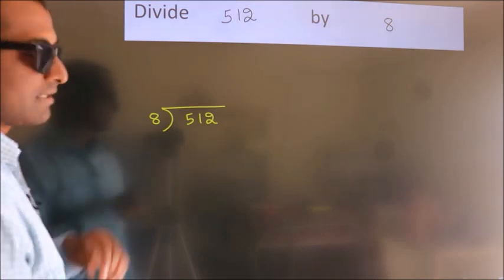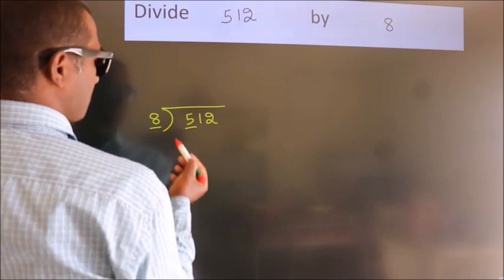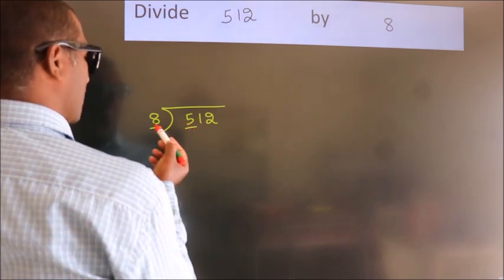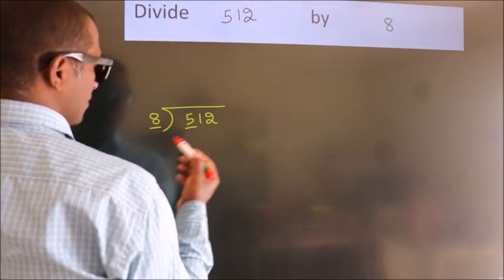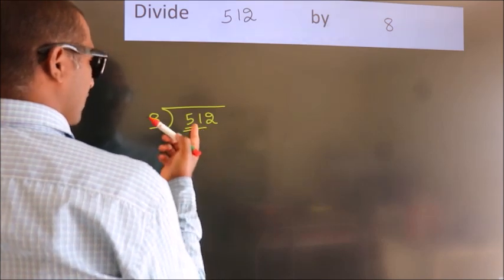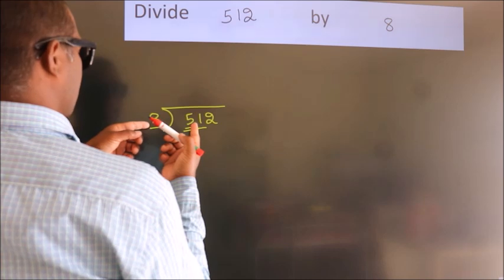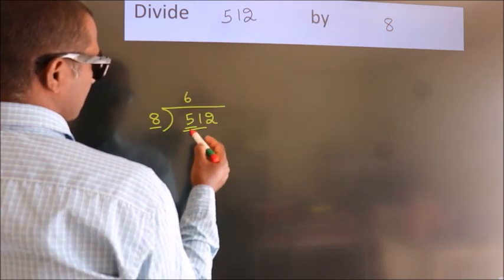Next, here we have 5, here 8. 5 smaller than 8. So, we should take 2 numbers, 51. A number close to 51 in 8 table is 8 times 6, 48.